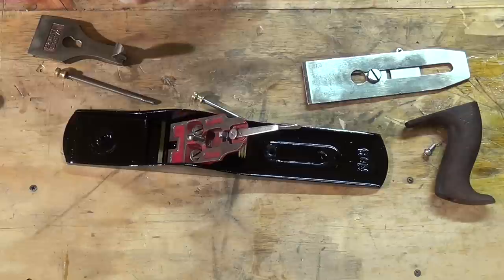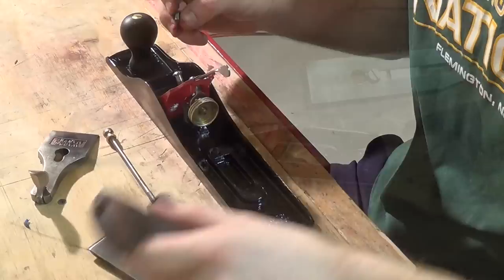I went ahead and put the knob and the handle back on now, and those brass headed screws look so nice next to the handles. I believe they're rosewood, but I'm not positive. Either way, the brass looks really nice next to them.